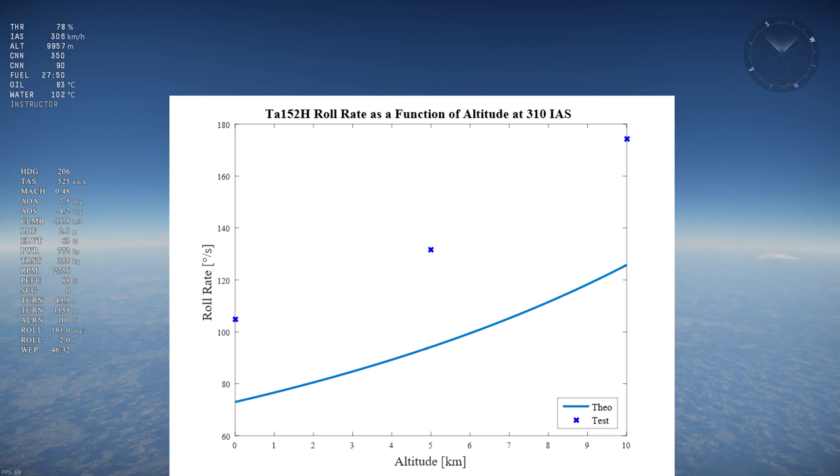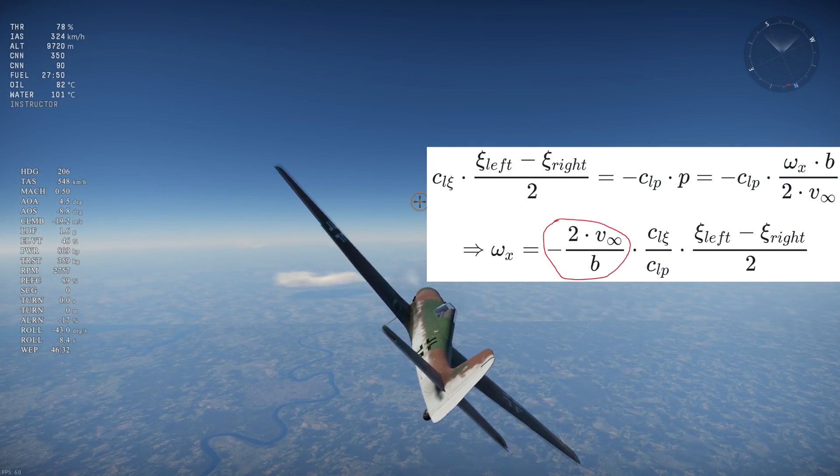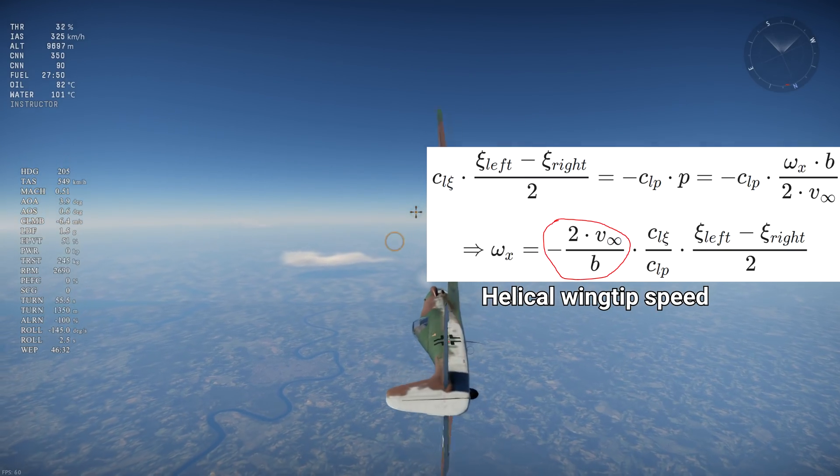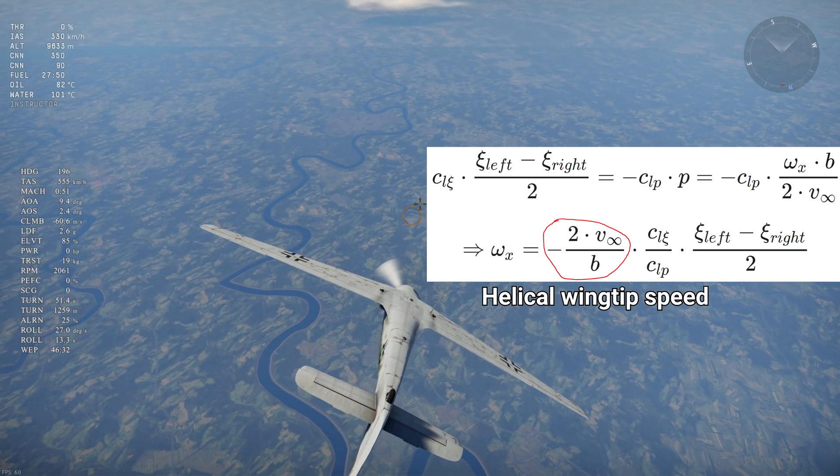The reason why true airspeed increases roll rate is because the higher the speed for a given roll rate, the lower the angle of attack will be, so the lower the roll damping will be. Wingspan and speed combined give the helical wingtip speed which is an important factor in roll rate.